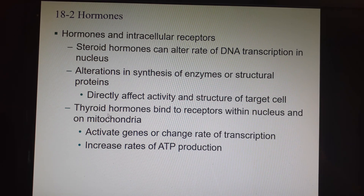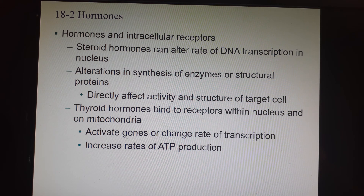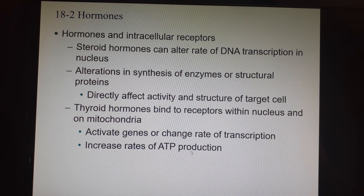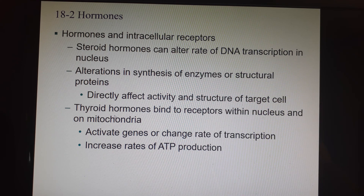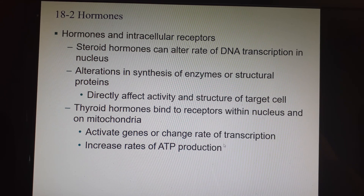Thyroid hormones will bind to receptors, and their receptors are actually inside the nucleus or on the mitochondria. Mitochondria affect energy — ATP production. So they will activate genes or change the rate of transcription and increase rates of ATP production. Your thyroid hormones, T3 and T4, will raise your metabolism by demanding that your mitochondria produce more ATP.